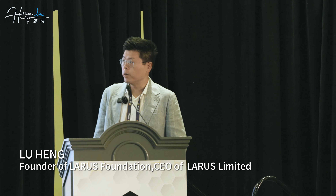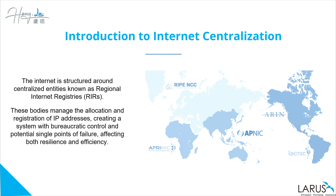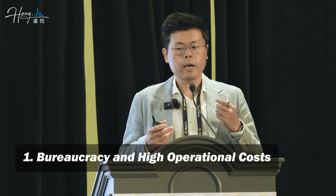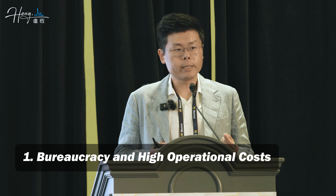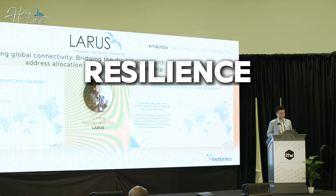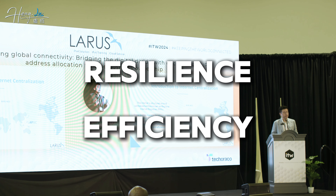First, an introduction to today's landscape on the subject, which is the internet structure around centralized entities such as regional internet registries. There are five private companies around the globe; those bodies manage locations of IP addresses, each one of them holding a piece of an entire pie of the registration database. They are bureaucratic and also a potential single point of failure that will affect the resilience and efficiency of the internet.